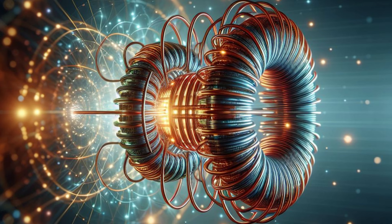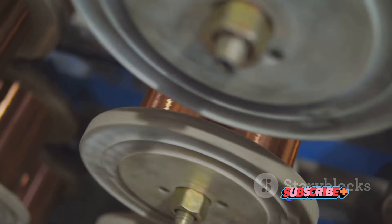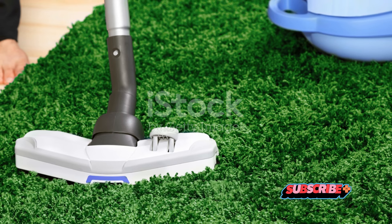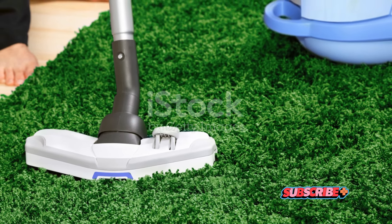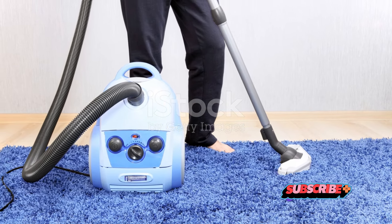It's worth noting that the coils in these appliances don't work in isolation. They're part of a larger system, working in harmony with other components to deliver the functionality we often take for granted. Whether it's keeping our food at the right temperature, maintaining a comfortable environment indoors, or ensuring our clothes are clean, these coils are instrumental. Isn't it fascinating to realize that such a seemingly simple component plays such a critical role in our daily lives? It's a testament to the ingenuity of electrical engineering and the power of coils. From cooling your food to washing your clothes, coils are the unsung heroes of home appliances.